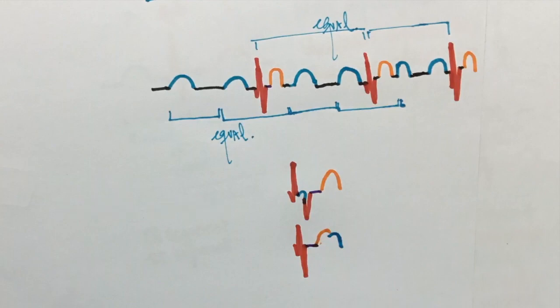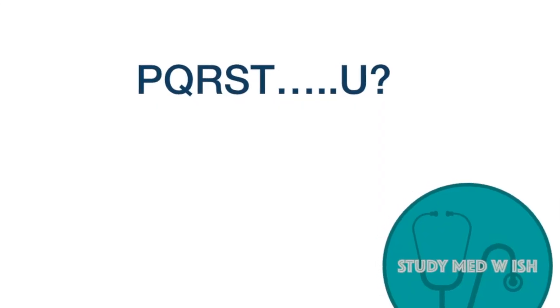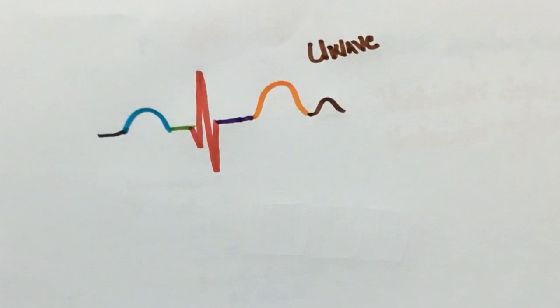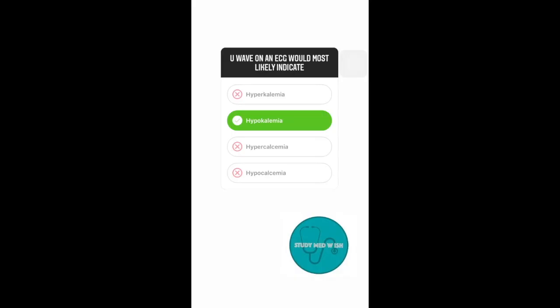Sometimes we can also see a tiny wave right after the T wave. This is known as U wave. It usually indicates hypokalemia. U waves also indicate hypocalcemia but there is also QTC prolongation seen with hypocalcemia.